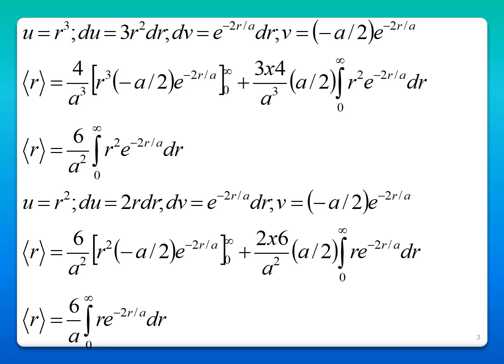This integration can be done with integration by parts. Take u as r³, so du is 3r² dr, and dv is e power minus 2r by a dr, so v is minus a by 2, e power minus 2r by a. Using integral u dv equals uv minus integral v du, substitute and apply the limits. The first term is 0, so we have the second term: 6 by a², integral from 0 to infinity r² e power minus 2r by a, dr.